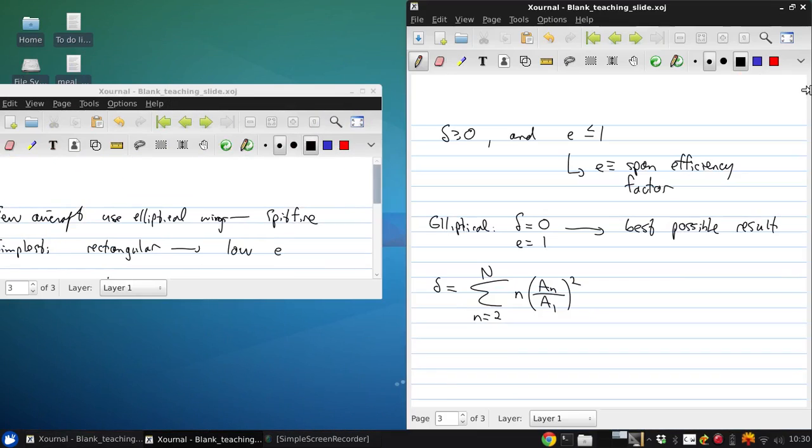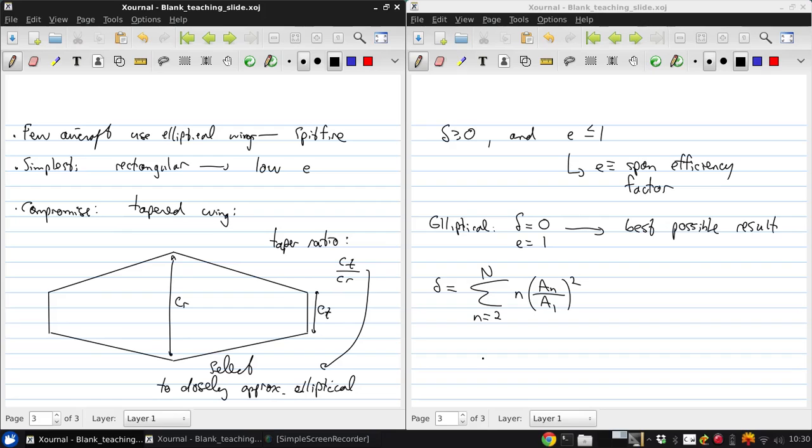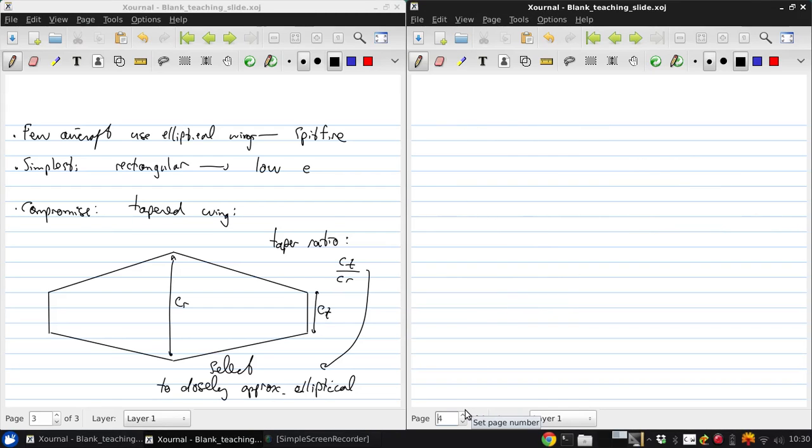So to try to illustrate exactly that effect, if you look at figure 5.20 of the text, which is on page 440, it shows delta as a function of aspect ratio and taper ratio. I'll sketch that figure here so that you can get a sense of the behavior.